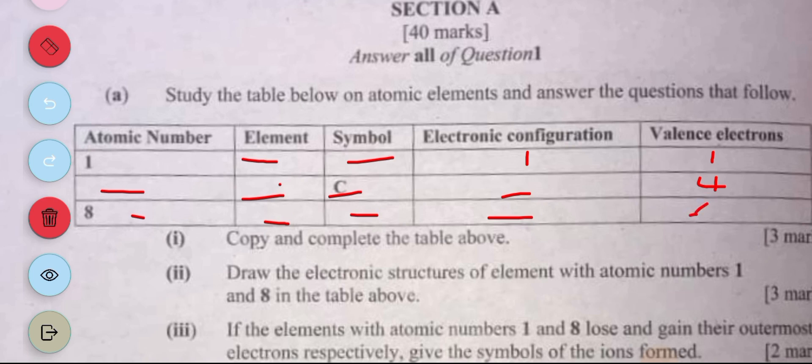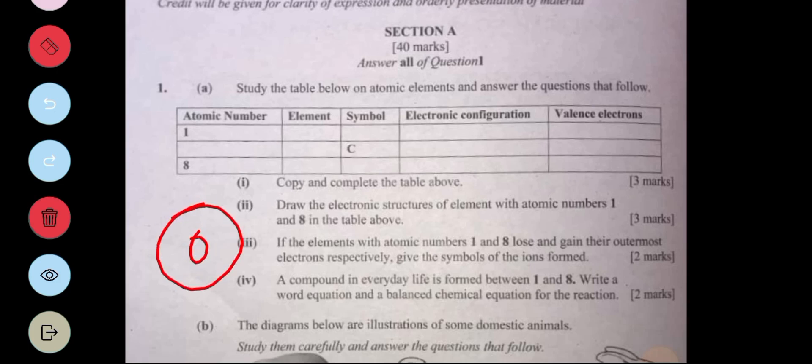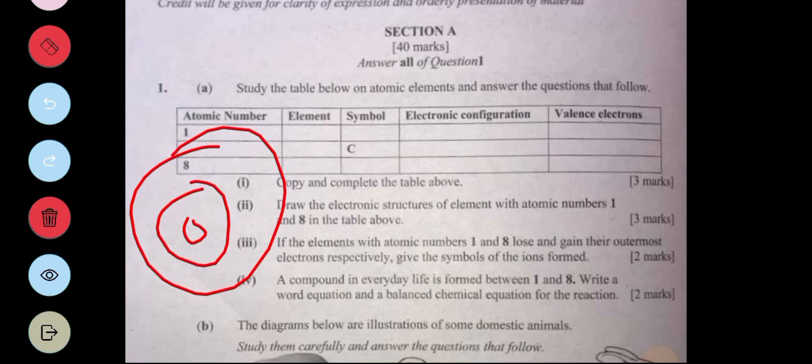Part two: Draw the electronic structures of elements with atomic number 1 and 8. For the atom with 1 electron, you draw your nucleus then your shell with 1 electron. For the one with 8, you draw your nucleus, first shell, second shell. First shell takes 2 electrons. Second shell takes 1, 2, 3, 4, 5, 6.